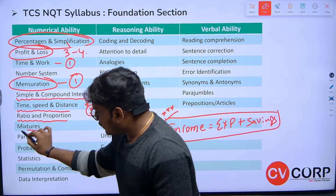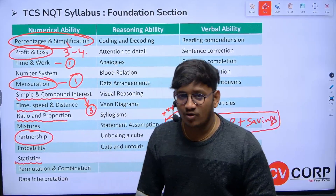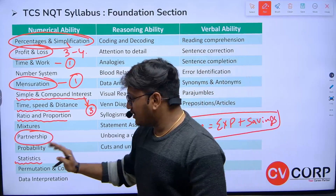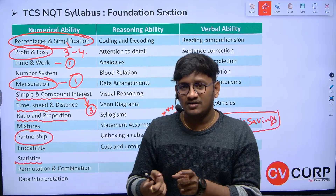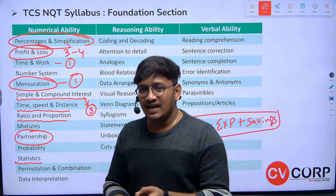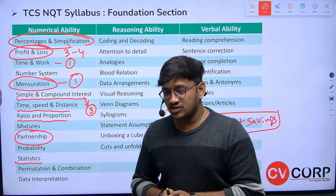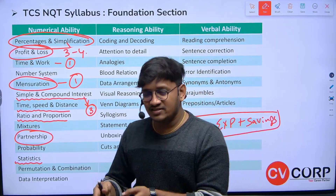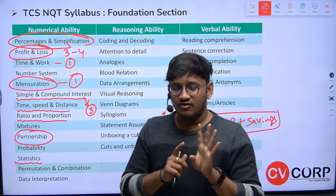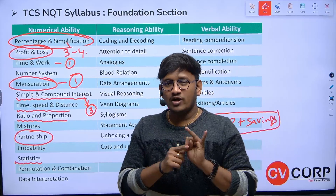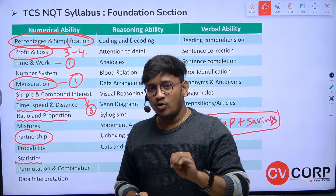From partnership, there was one question. From statistics — finding the mean, which means averages — one question was given where they provided a table with certain values and asked students to calculate the mean. For the next slot, make sure you go through all five statistical measures: mean, mode, median, standard deviation, and variance. If you know how to calculate all five, you will definitely get one question from statistics.